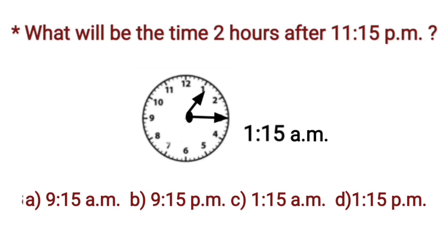So, children, let's find out the correct option from the given options. It's option A, 9:15 AM. No. Option B, 9:15 PM. Again, it's incorrect. Now, option C, 1:15 AM. That is the correct one because we have found it. So, children, let's put a tick here.